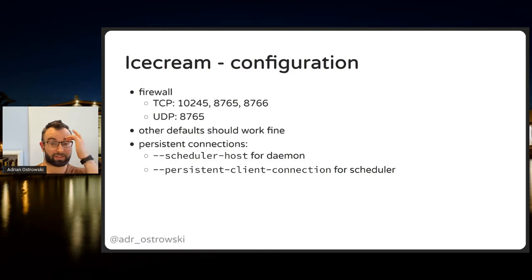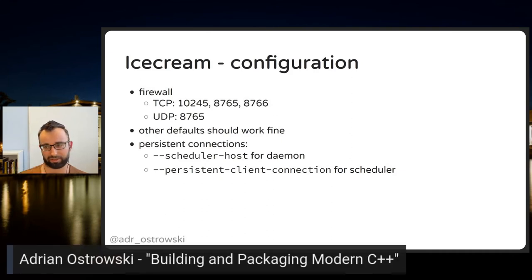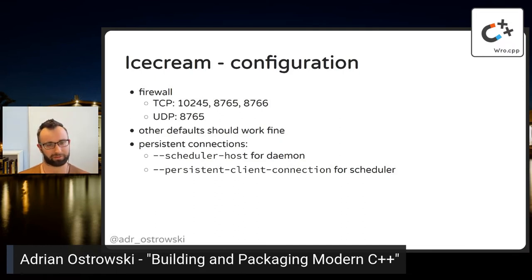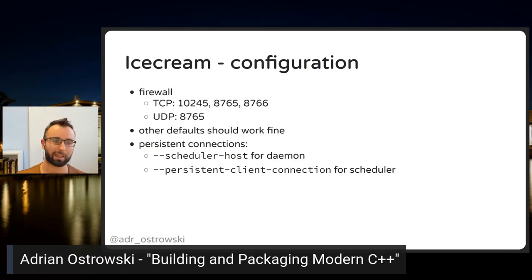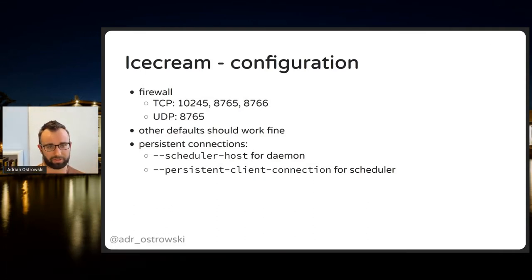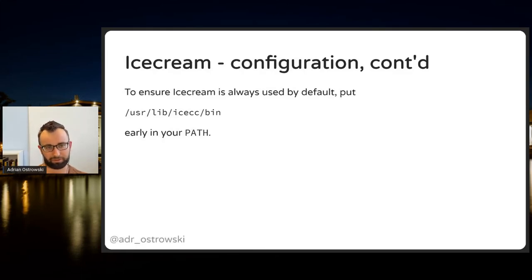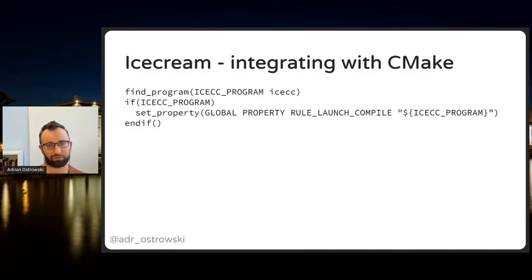The scheduler should always have dedicated resources, as scheduler latency has great impact on overall system performance. To use IceCC by default, put the binary directory in your PATH. To use it with CMake, do the same thing as with Ccache — look for the binary and if found, set it as the RULE_LAUNCH_COMPILE.